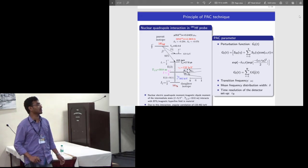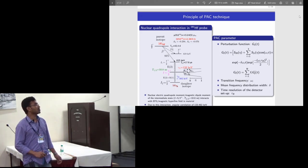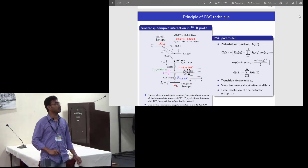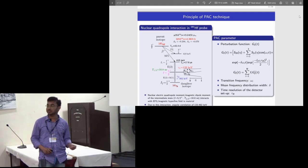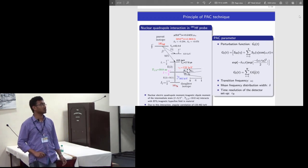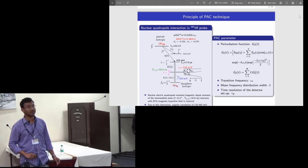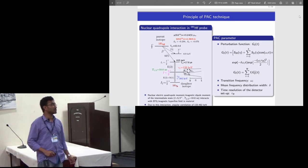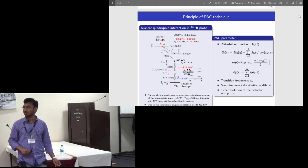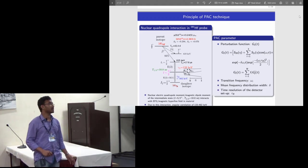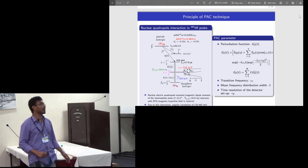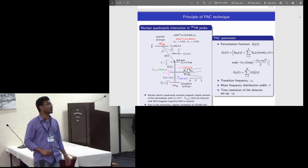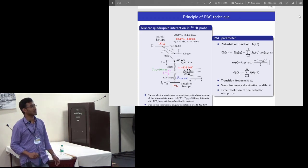The basic principle of PAC technique: we have used a 181 hafnium probe isotope. In PAC, the probe is introduced into the sample and it essentially emits two coincident gamma rays passing through an intermediate level of lifetime 10.8 nanoseconds. When this probe isotope is introduced into the material which has an electric field gradient or magnetic hyperfine field, then the nuclear moments interact with these hyperfine fields and we see a precession of angular correlation and the angular correlation gets perturbed.